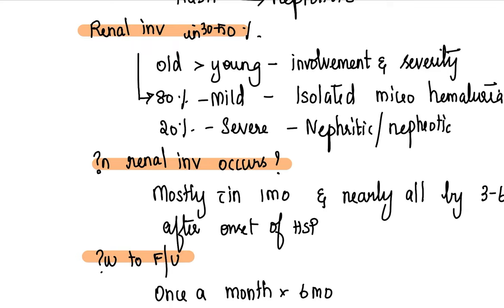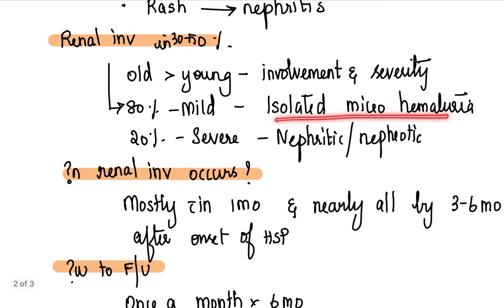Renal involvement occurs in up to 30 to 50% of Henoch-Schonlein purpura, and 80% of those are mild cases. By mild I mean they just have isolated microscopic hematuria. 20% have severe renal involvement. Now there are certain risk factors that can predict severity of renal involvement: older the child at presentation, earlier the renal presentation, already underlying renal disorder. All of this can have a more severe renal manifestation compared to a younger kid or a pristine kidney.